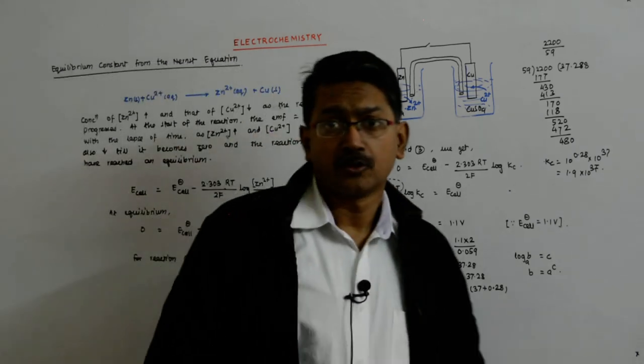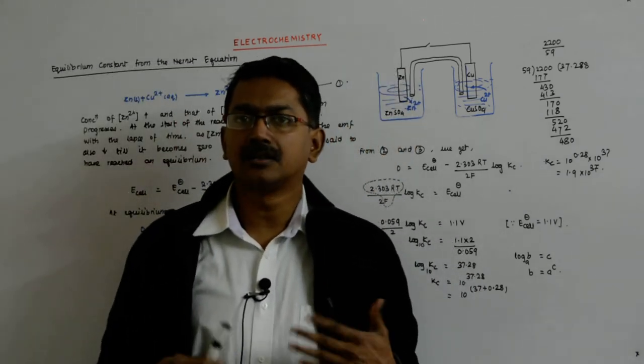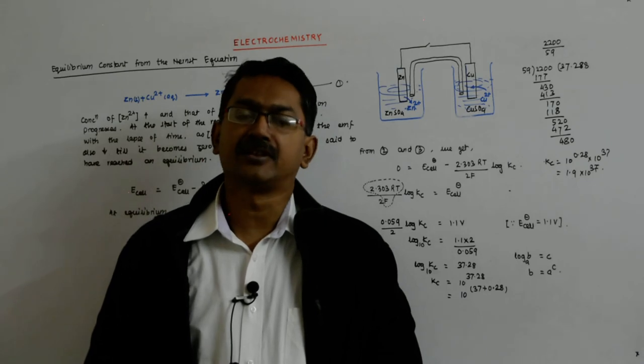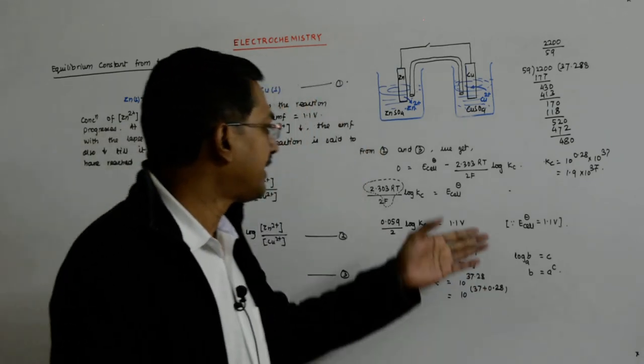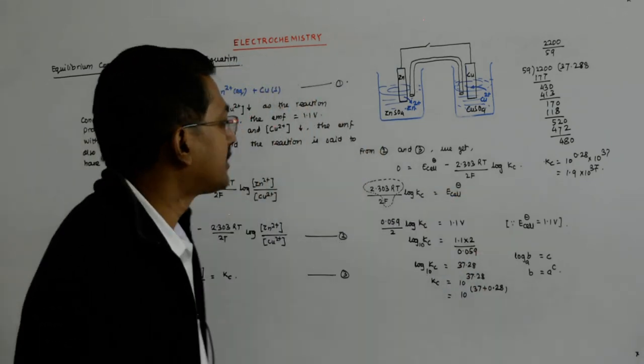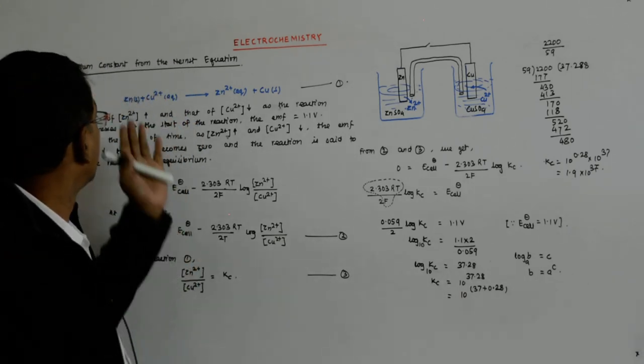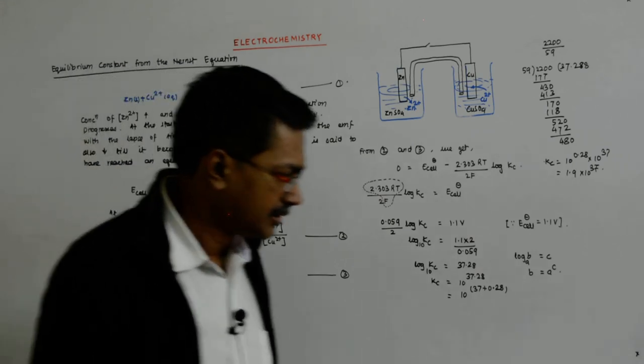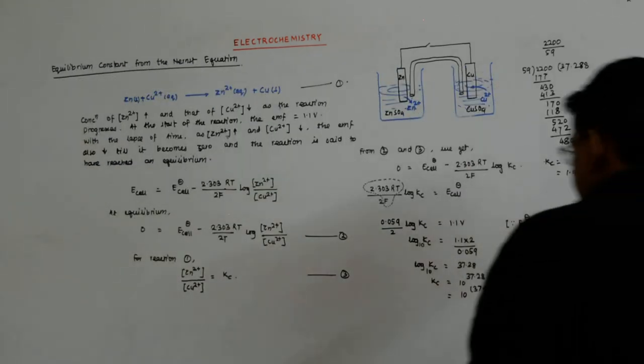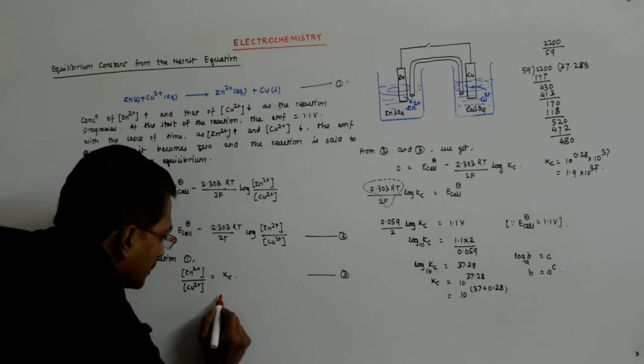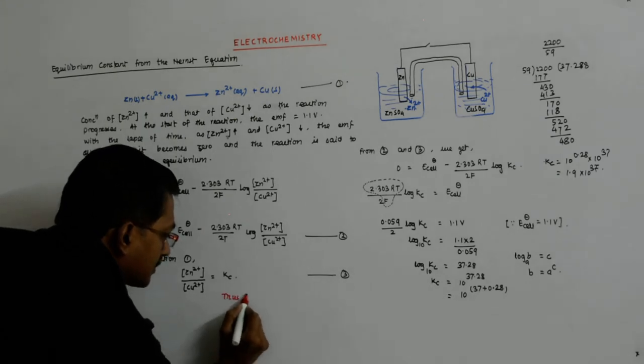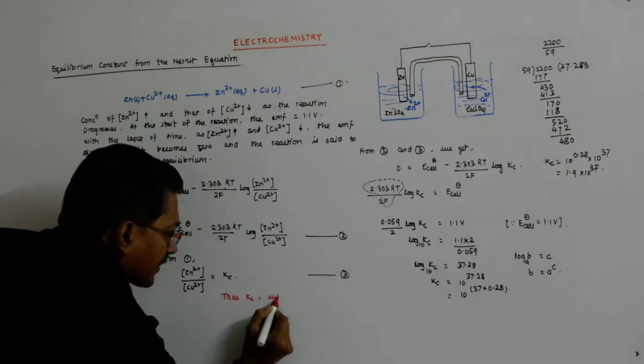So equilibrium constant, which is otherwise experimentally difficult to measure, can be readily measured by using the Nernst equation. So Kc, which...